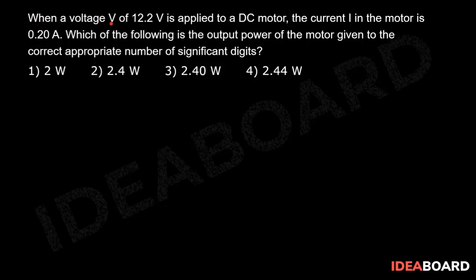When a voltage V of 12.2 volts is applied to a DC motor, the current I in the motor is 0.20 amperes. Which of the following is the output power of the motor given to the correct appropriate number of significant digits?